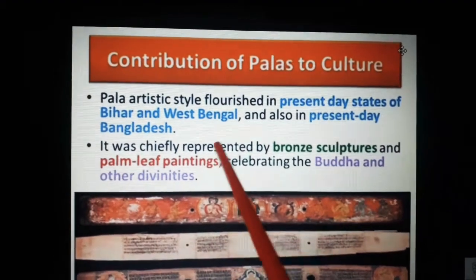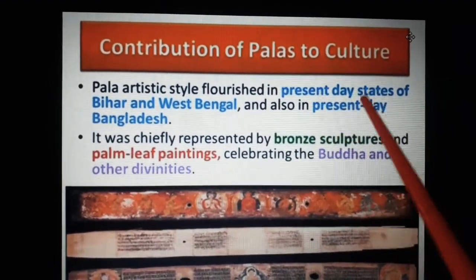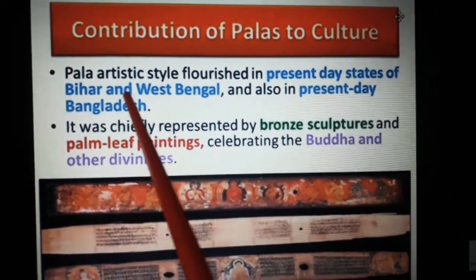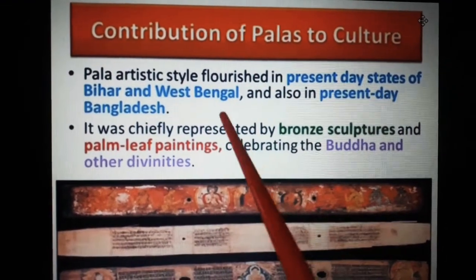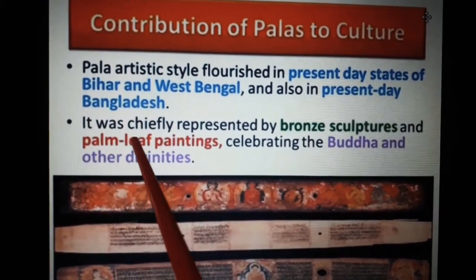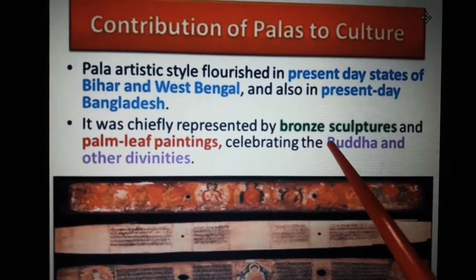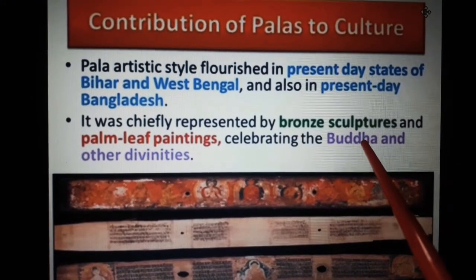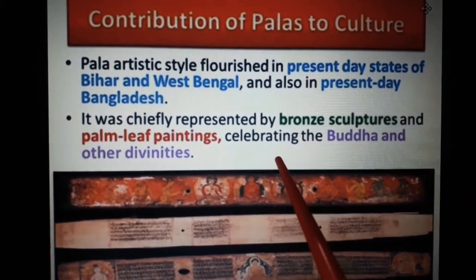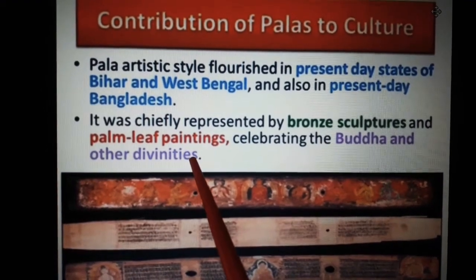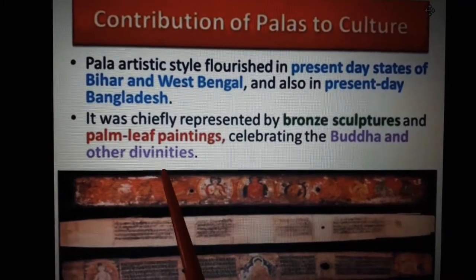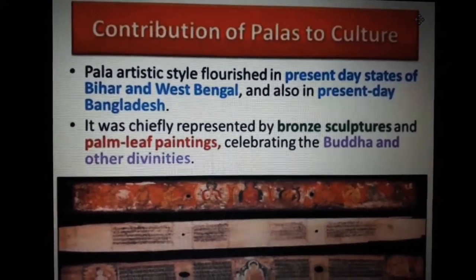Pala artistic style flourished in the present-day states of Bihar and West Bengal, and also in present-day Bangladesh. It was chiefly represented by bronze sculptures — the sculptures were made of bronze — and also palm leaf paintings celebrating the Buddha and other divinities, including many other gods as well.